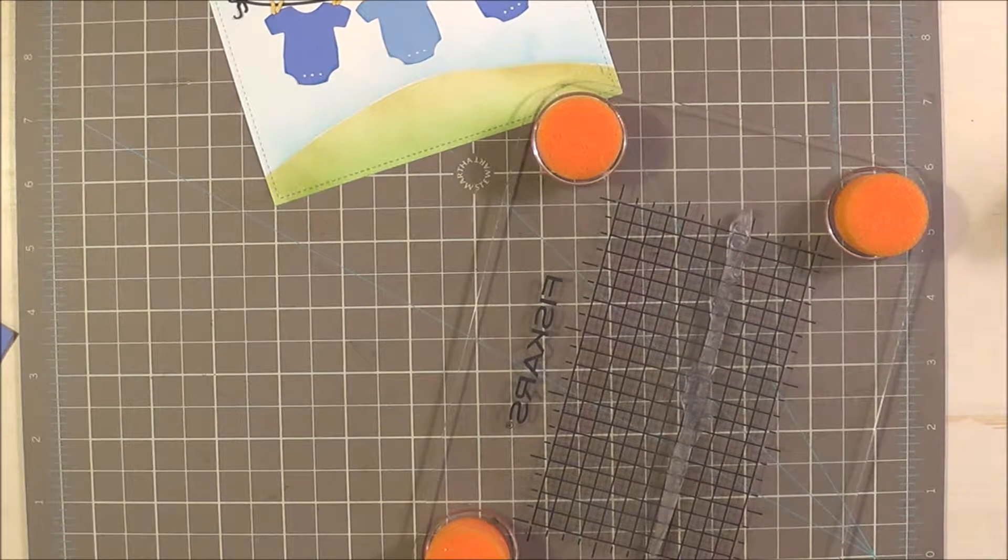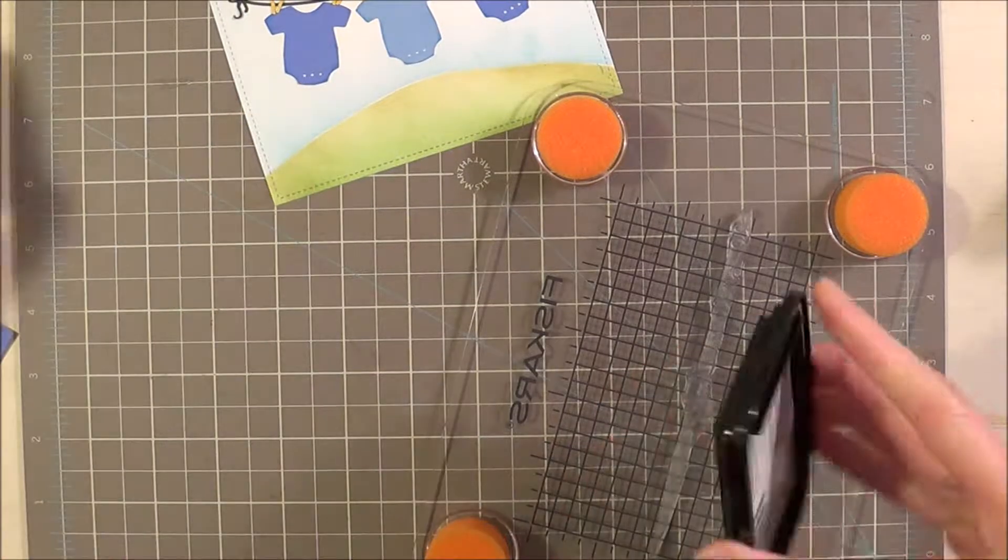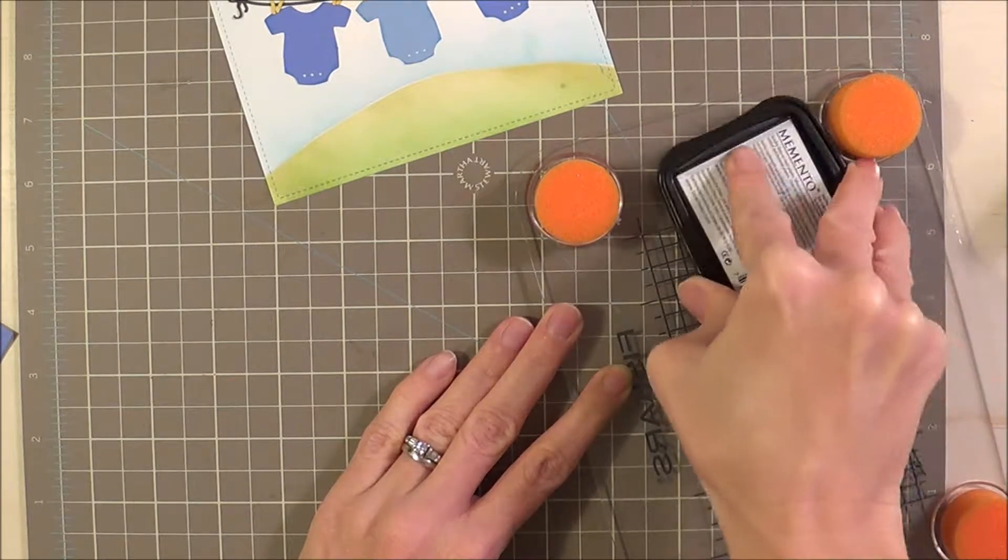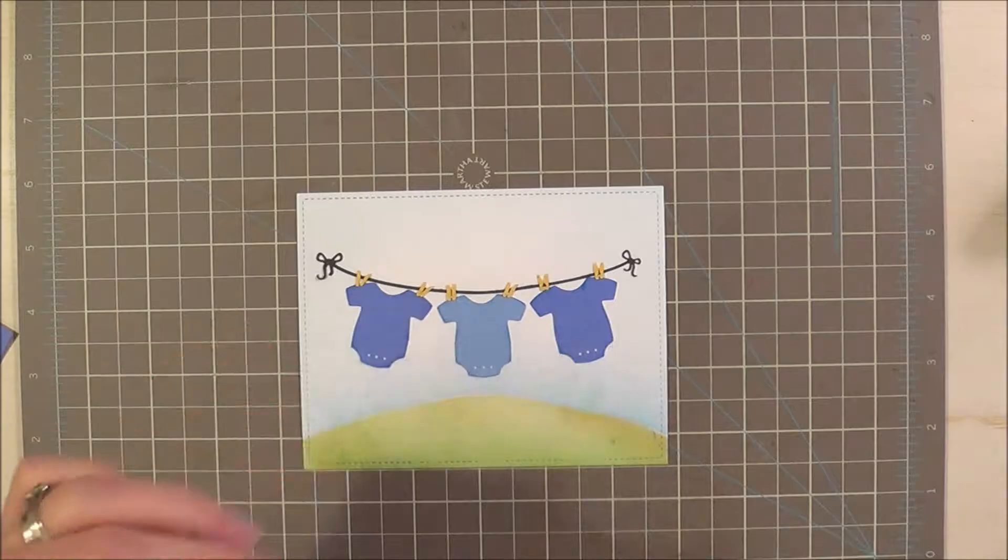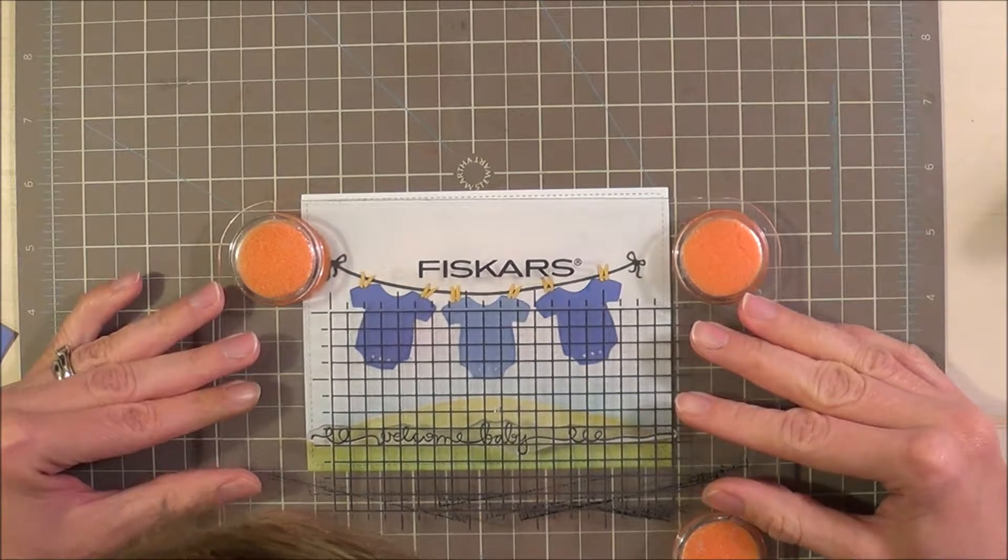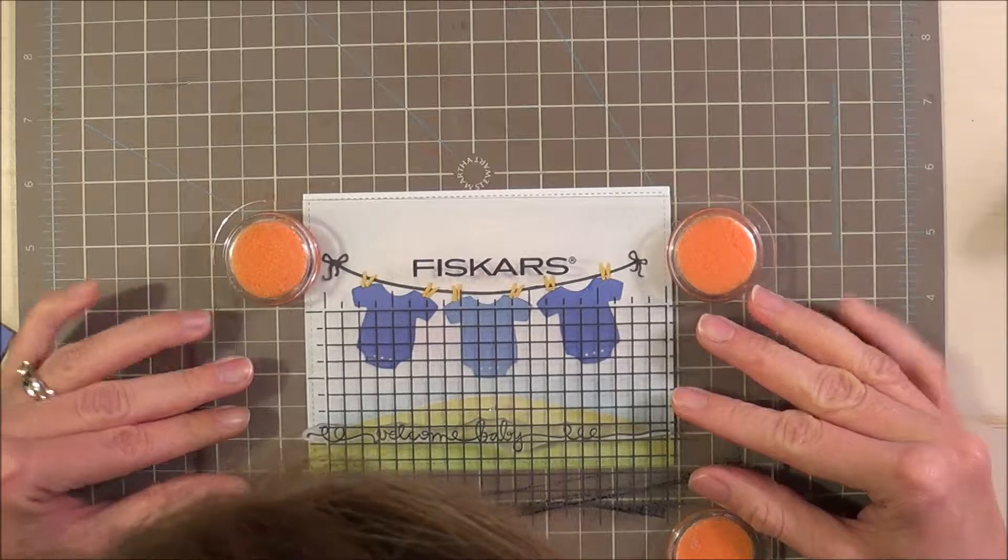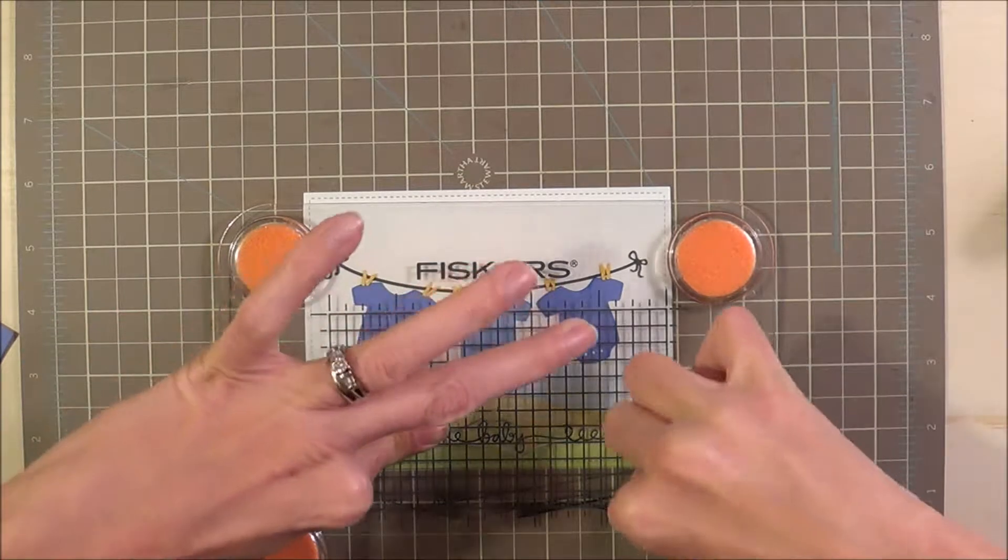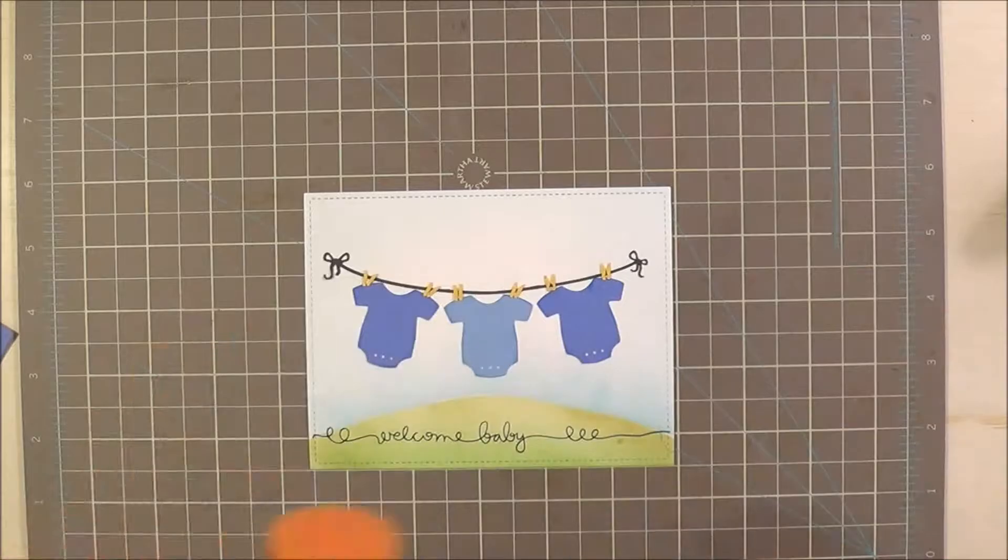So today, for my ink, I'm going to use some Memento Tuxedo Black ink. I'm going to ink up the bottom of this stamp. Make sure I don't have any ink on my fingers. I'm horrible for that. Line it up on the grid. Just give it a nice, good push down everywhere. And that looks so cute. I love it.